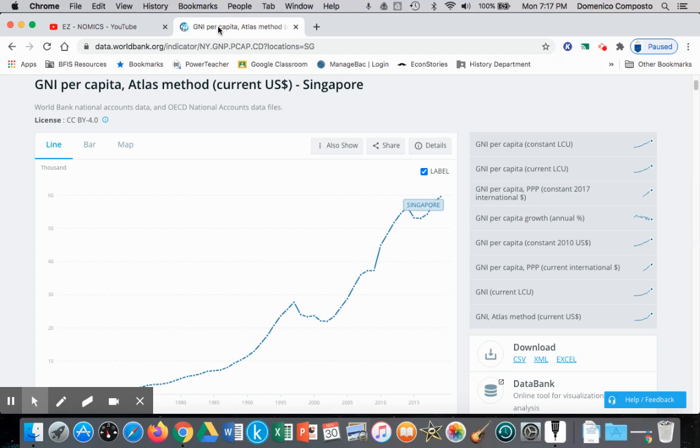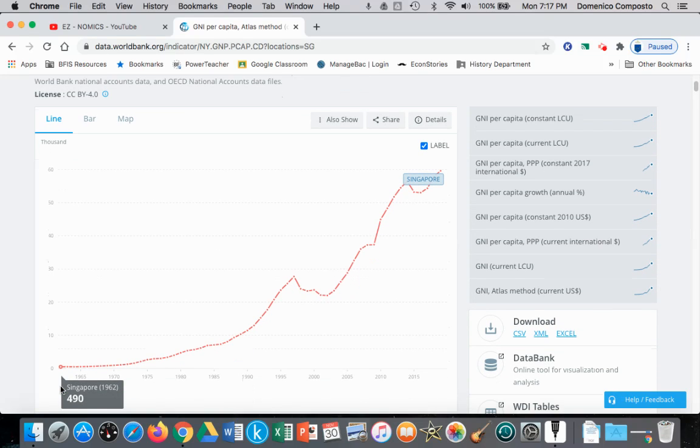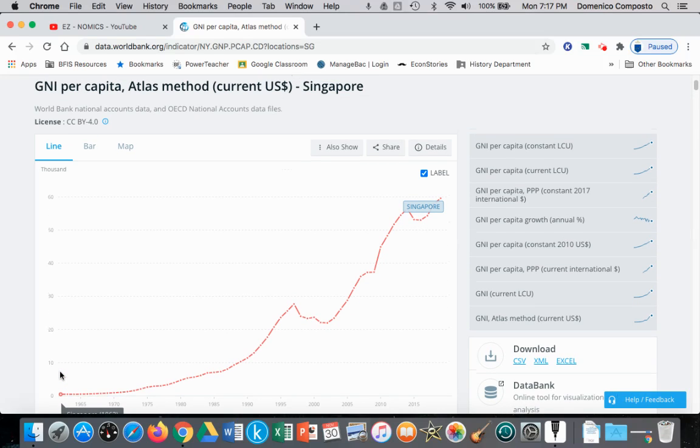In that video, I used Singapore as a great example of rising per capita income and what would be happening to demand for normal goods and luxury goods over time. What's interesting about Singapore is that when it declared independence in 1962, its per capita income was $490 U.S. dollars.